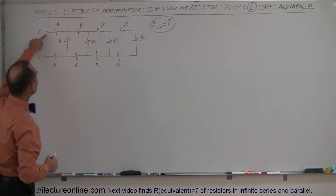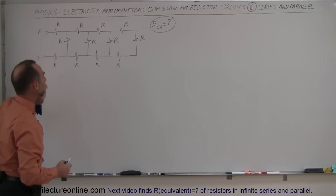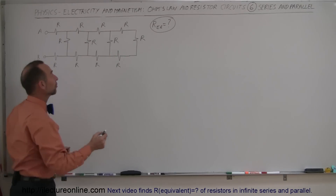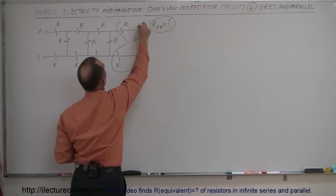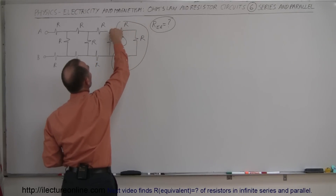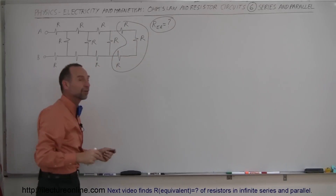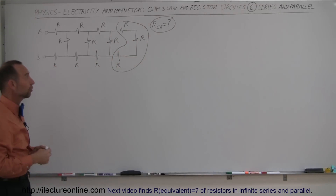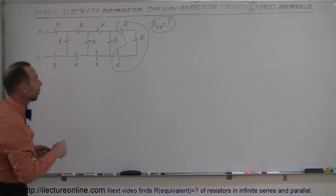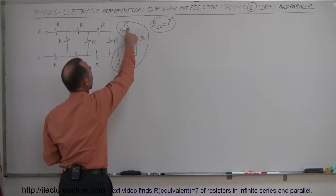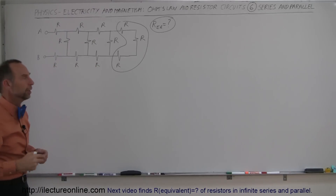What they want to know is the equivalent resistance between A and D with all these resistors connected. You want to start from the back and take these three resistors, because notice they're all in series. When you go from this junction to this junction, you must travel through all three resistors, so therefore they're in series. When we add series resistors together that gives us the equivalent resistance, so the equivalent resistance of this branch is 3R.